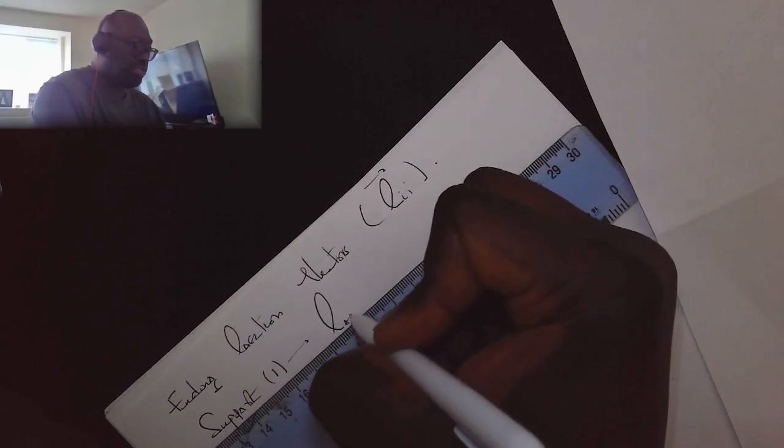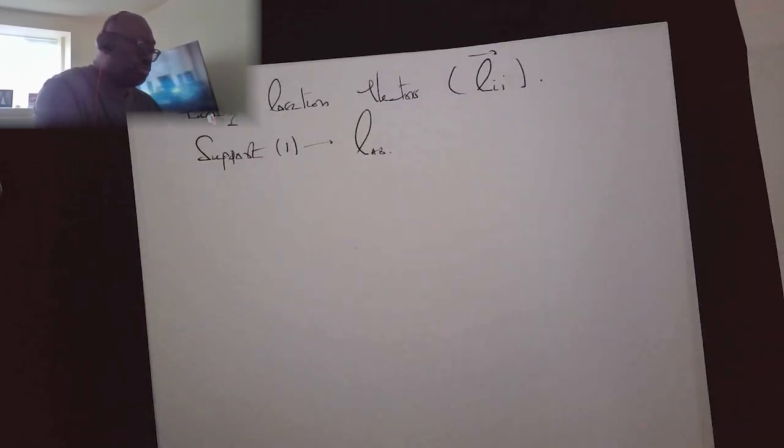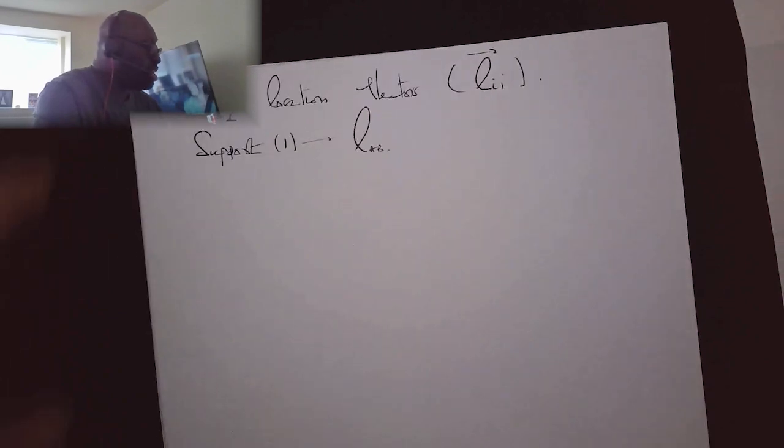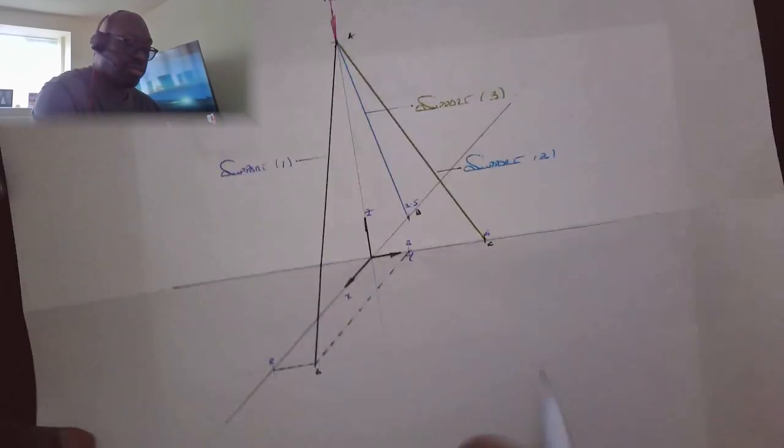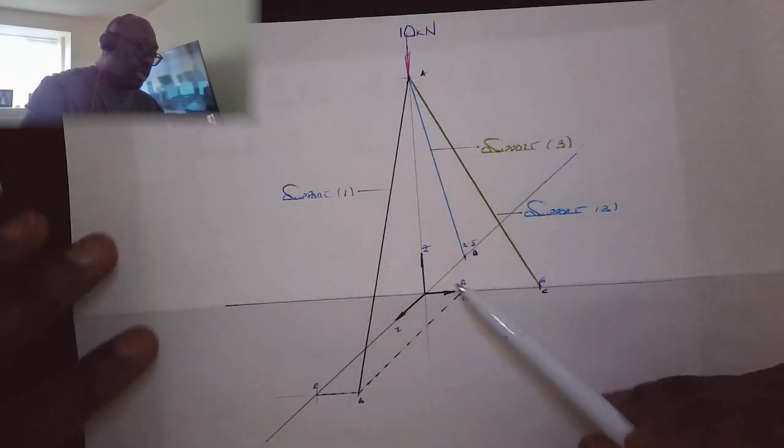So upwards we assume positive, downwards negative, y rightwards positive, leftwards negative, and then x towards me positive, away from me negative. The sign convention is quite important here.